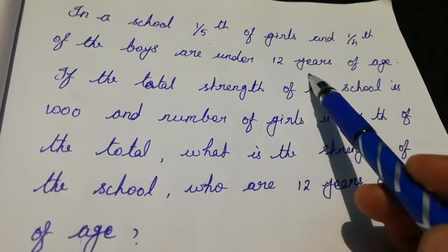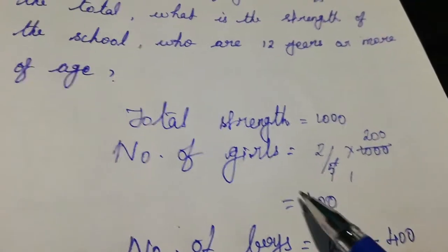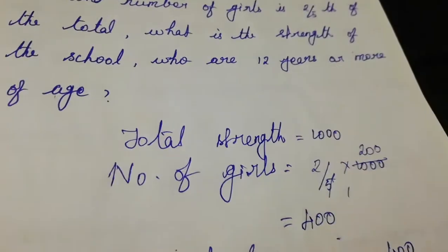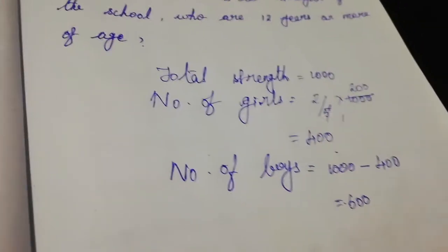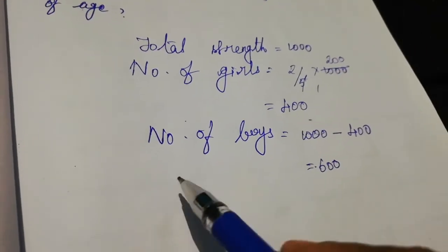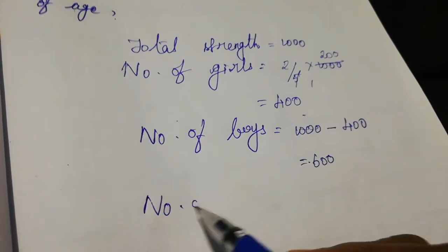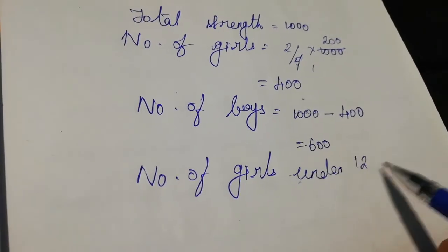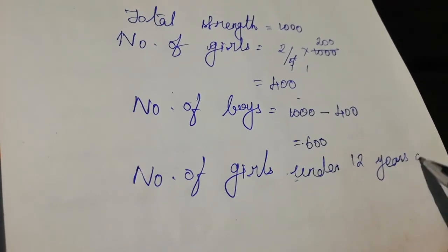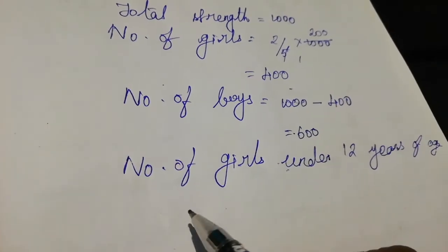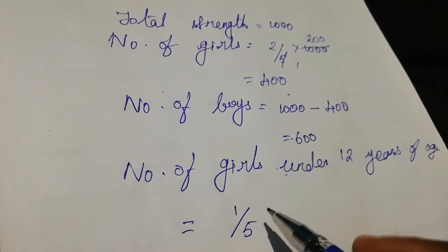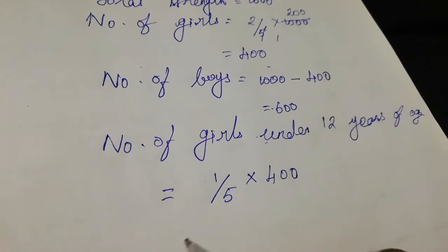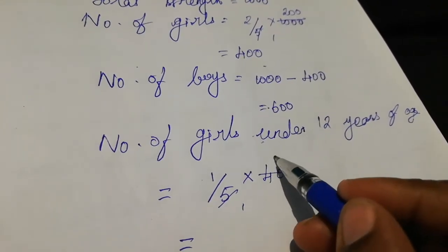Now, one-fifth of girls are under 12 years of age. So the number of girls under 12 years is one-fifth of 400. That is 1/5 into 400, which equals 80. So 80 girls are under 12 years of age.